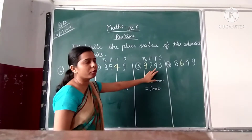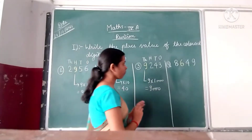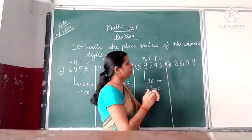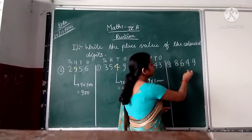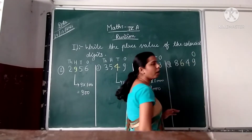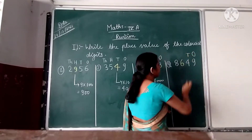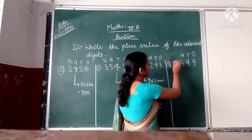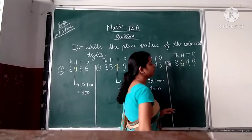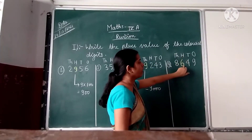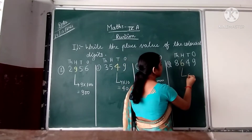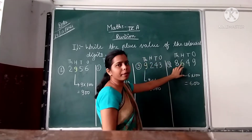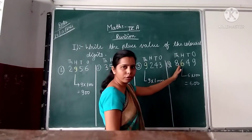This is the place value of digit 9 in 9243. In the next question: 8649. We have to find out the place value of digit 6. In this question, 9 represents the place value of 1, 4 represents the place value of 10, 6 represents the place value of 100, and 8 represents the place value of 1000. The place value of 6 is 6 into 100 equal to 600. The place value of digit 6 is 600 in the given question.